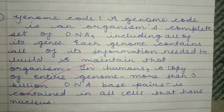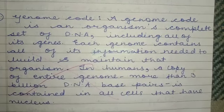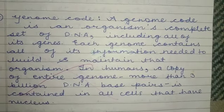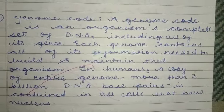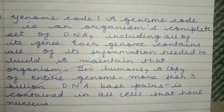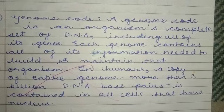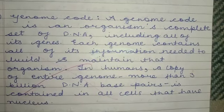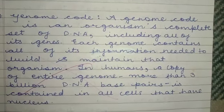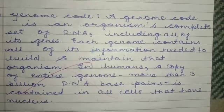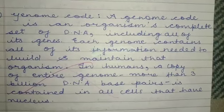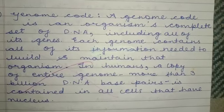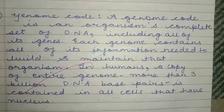So we will study the genome code in this video. A genome code is an organism's complete set of DNA, including all of its genes. Each genome contains all the information needed to build and maintain that organism. In humans, a copy of the entire genome — more than 3 billion DNA base pairs — is contained in all cells that have a nucleus.